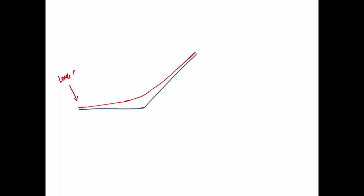That hockey stick represents the intrinsic value of the option — how much you get from the exercise decision. Prior to expiry, you'd expect the option to have a little bit of time value and trade above that blue hockey stick. This is what a long call would look like prior to expiry — trading along that red curve.